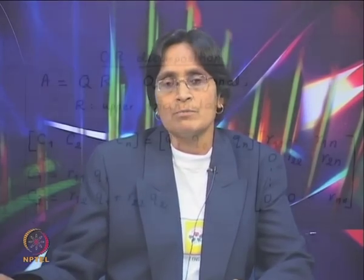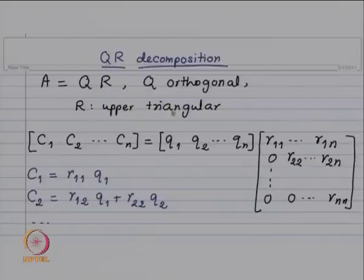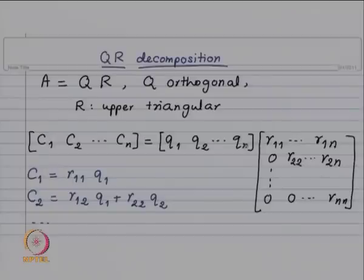I will describe what the QR method is and then we are going to consider some examples. Our matrix A is invertible. We want to write it as Q into R, where Q is an orthogonal matrix — that means Q transpose Q is identity — and R is an upper triangular matrix. C1, C2 up to Cn are columns of our matrix A, and Q1, Q2, Qn are columns of matrix Q.